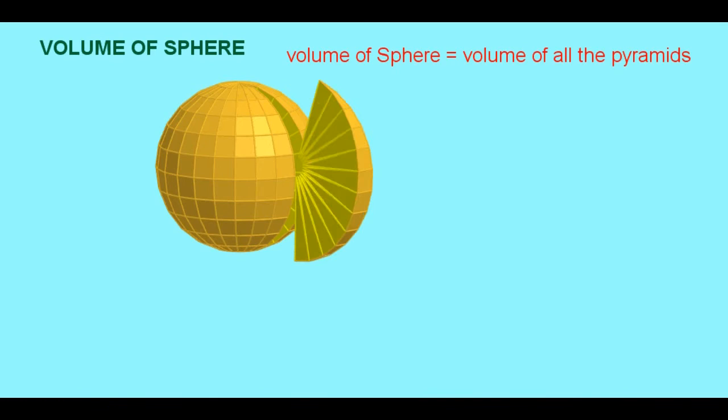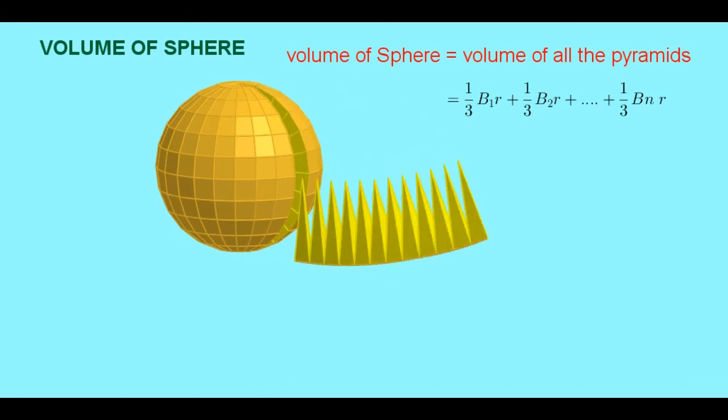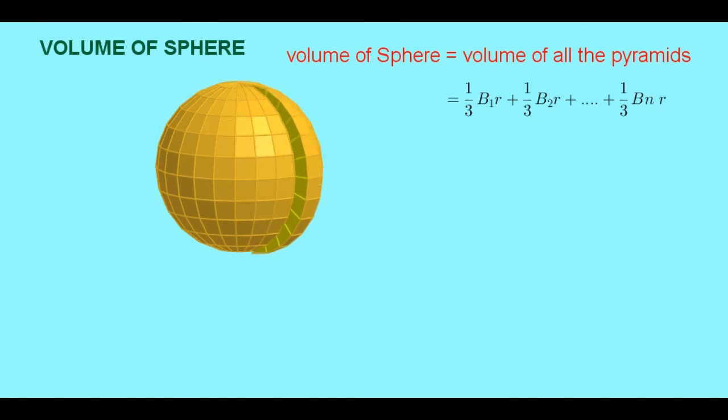Volume of all the pyramids we can write as 1 by 3 into base area into radius. Here height of the pyramid is radius of that sphere. So like that, all n pyramids, sum of all volumes of the pyramids